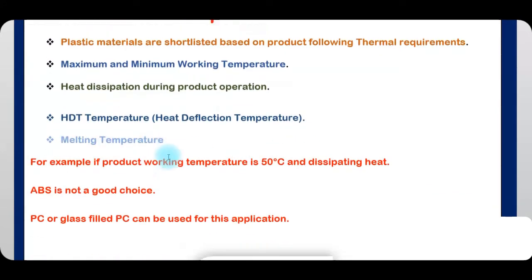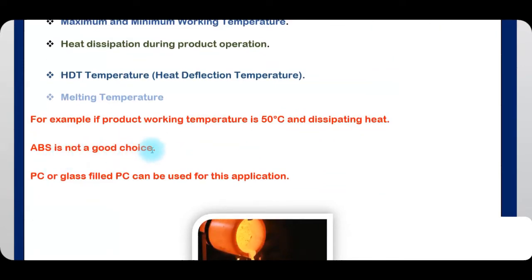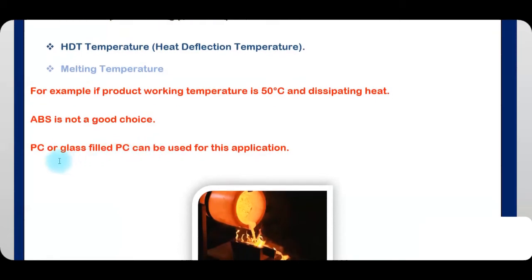Also consider melting temperature. For example, if the product working temperature is 50 degrees Celsius and is dissipating heat, ABS is not a good choice. PC or glass-filled PC can be used for this application.